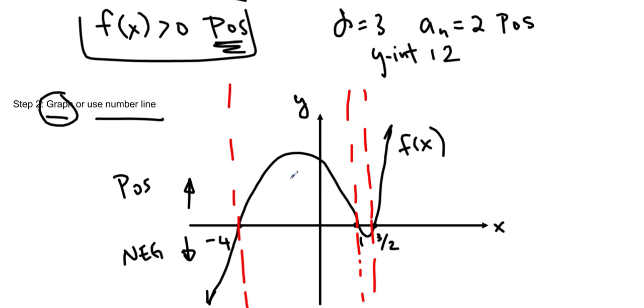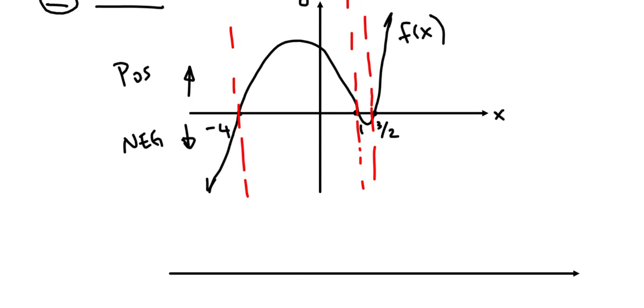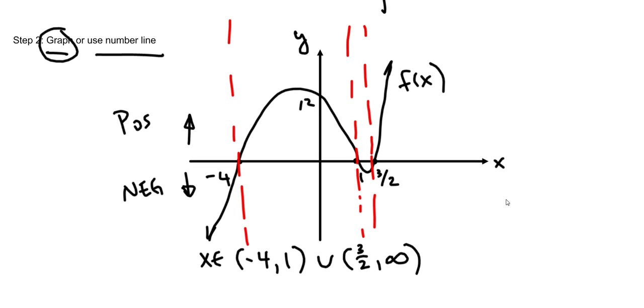We can use this information to write our answer. We want the answer to be x in, and we want them positive. So we're going from -4 to 1. That's where they're positive. I want it positive and not equal to zero, so I'm going to use open bracket to 1, union, and then 3/2 to infinity. That's our solution. We're basically just using all of the skills that we learned in chapter three and then applying them to this new concept.